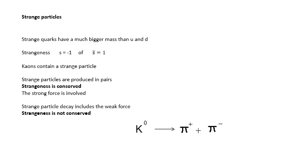Muons, strange particles, what do we need to know? Strange quarks have a much bigger mass than up and down quarks. A strange quark has a strangeness of minus 1. An anti-strange has a strangeness of 1. Kaons contain a strange particle. Strange particles are produced in pairs, so that strangeness is conserved.